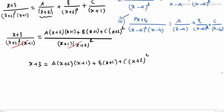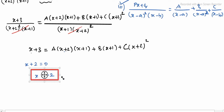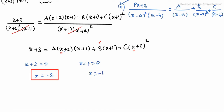Find the critical points. First, x + 2 = 0, so x = minus 2. Substituting x = minus 2 makes the A term and C term zero, leaving only B. Next, x + 1 = 0, so x = minus 1. Substituting x = minus 1 makes the A term and B term zero, leaving only C.